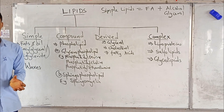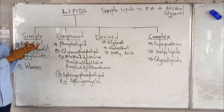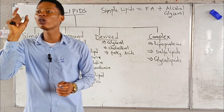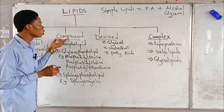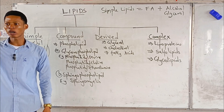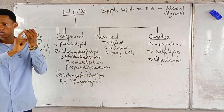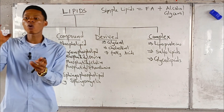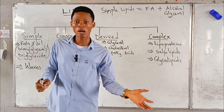Compound lipid: in addition to fatty acid and alcohol present in simple lipid, we are adding something. Compound lipid is composed of simple lipid plus an additional compound. So compound lipid contains three things: number one, fatty acid; number two, alcohol; number three, other compounds — an additional compound. Anytime you add something else to fatty acid and alcohol, what you now have is a compound lipid.